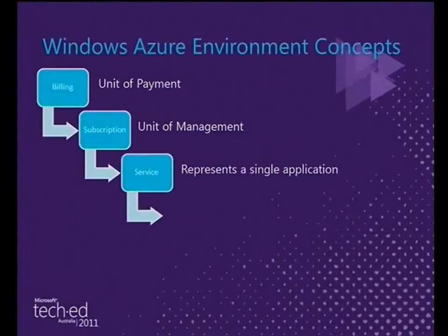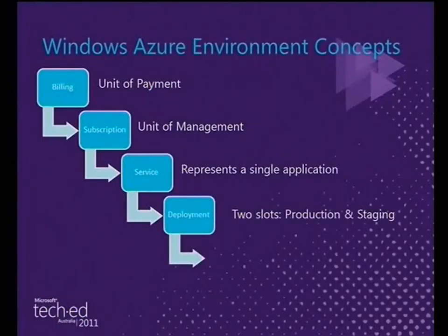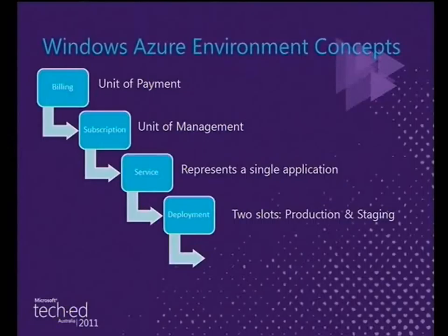Inside a subscription you set up what we call managed services — a service is typically the actual application you're building, a collection of roles and storage accounts. The application has two deployment slots, and this is where it gets confusing because they're called production and staging. Every single service has those two slots. Don't confuse these production and staging slots with a production and staging environment — they mean completely different things.